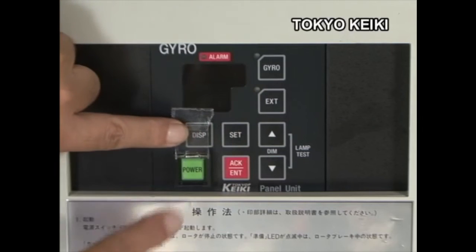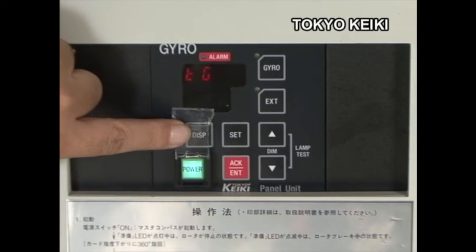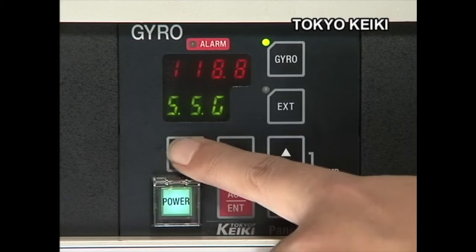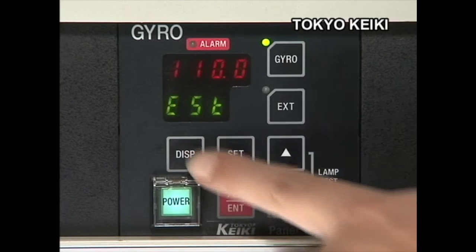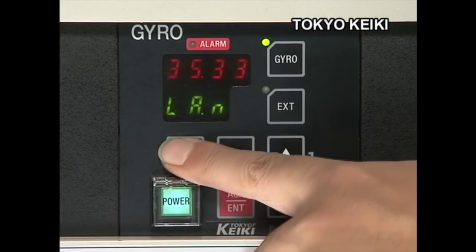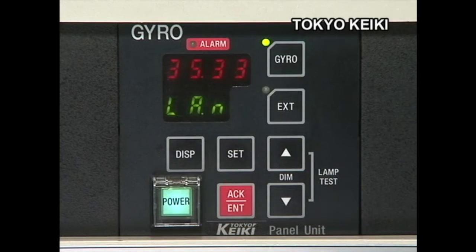For the gyro compass made by Tokyo Keiki, turn on the main power switch. Check the ship's position, latitude, and ship speed, then set the starting azimuth.